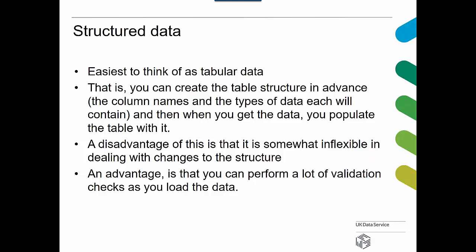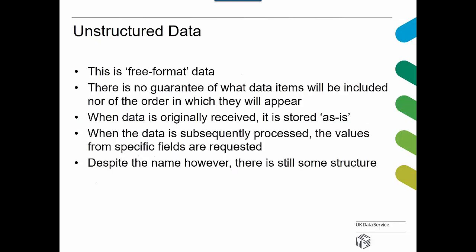Structured data consists mainly of tables where you define column names, specify the data types, and then populate the table with rows of data in the right format and position. The disadvantage is that it's somewhat inflexible when dealing with changes in structure — if you suddenly need a new column or need to reorder columns, you've got a problem. An advantage is that you can perform a lot of validation checks as you load the data, because you already know what type of data to expect in each column. Unstructured data, on the other hand, is free format — there's no guarantee what data items will be included, nor the order in which they'll appear.